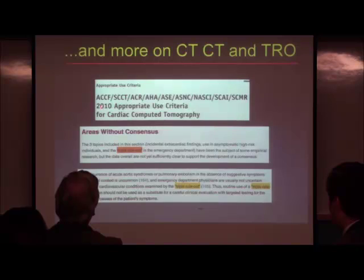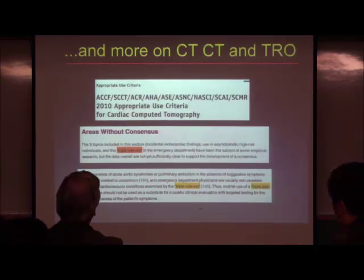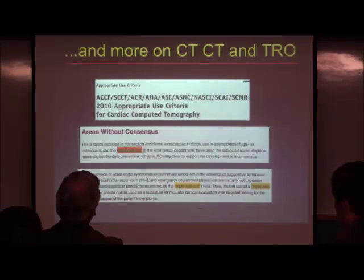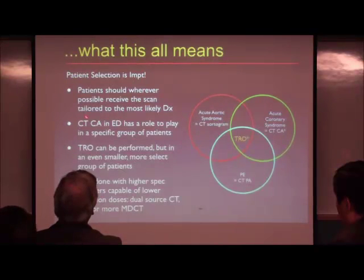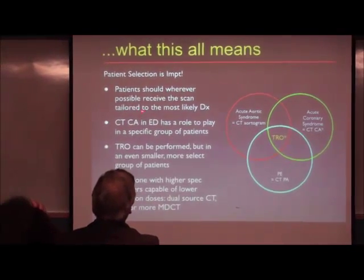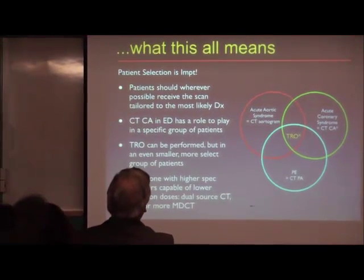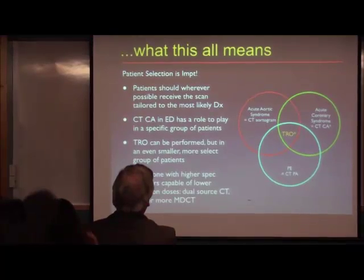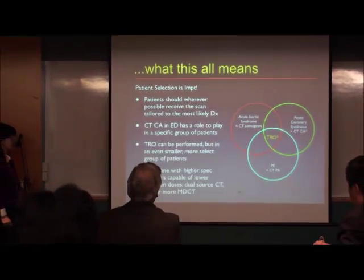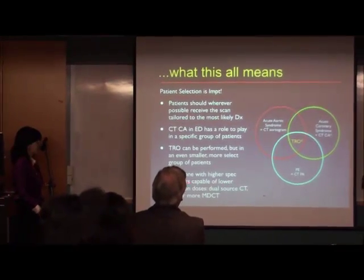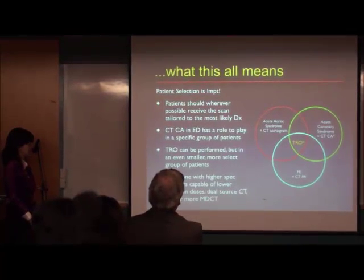The 2010 paper similarly suggests that the triple rule-out should not be used as a routine imaging study just to be safe and exclude everything — no kiasuism allowed. Patient selection is important. Wherever possible, patients should receive the scan tailored to the most likely diagnosis. CT coronary angiogram in the ED has a role in a specific group of patients. Triple rule-out can be performed in an even smaller, more select group — and you need a high-spec scanner capable of low radiation doses.